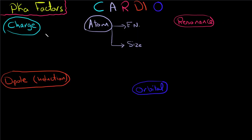The pKa factors are the factors you need to evaluate the strength of an acid. There are five factors, and their acronym spells out CARDIO. The first factor is Charge.